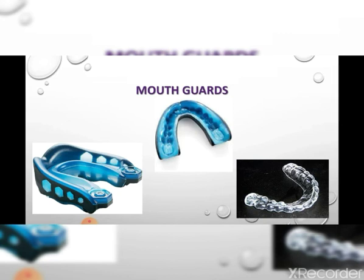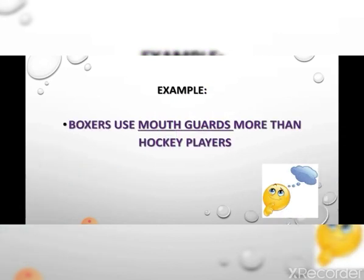And the last word: mouth guard. A mouth guard is a protective device that covers the teeth and gums to prevent and reduce injury to the teeth. It protects our mouth. Example: boxers use mouth guards more than hockey players.